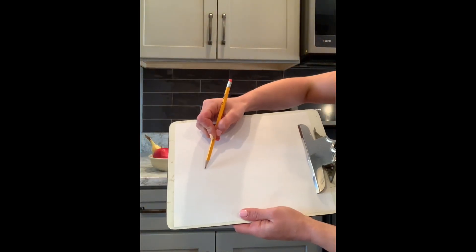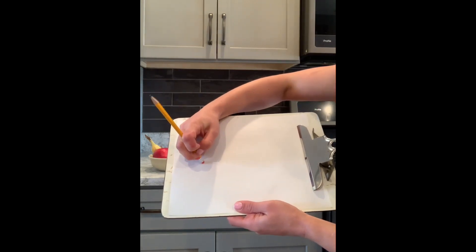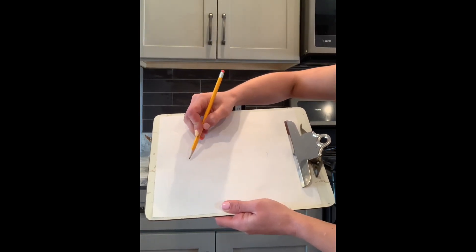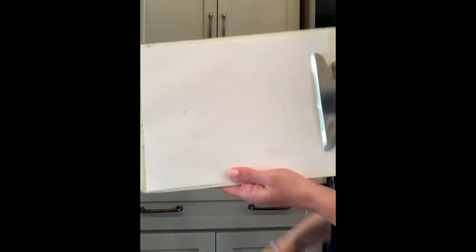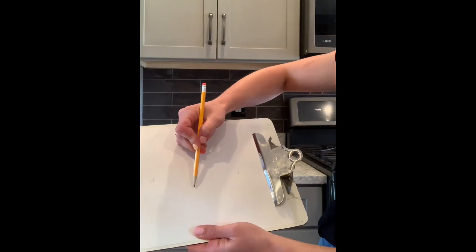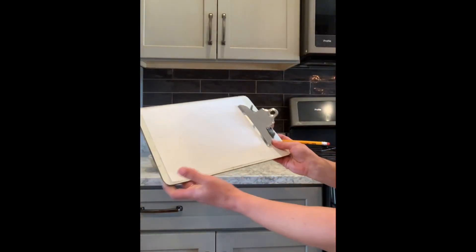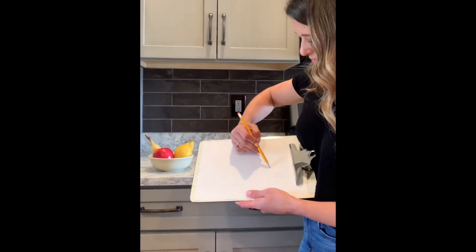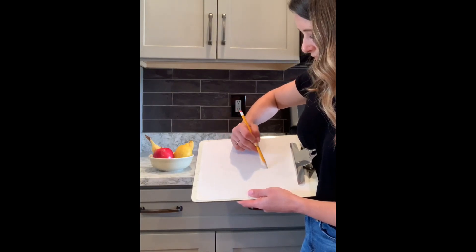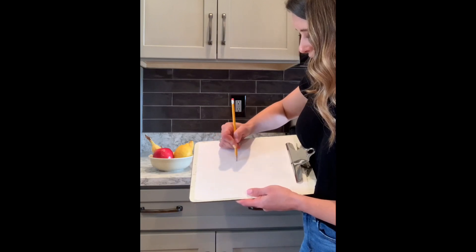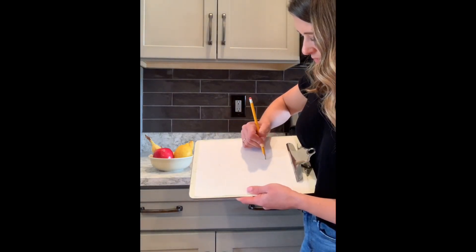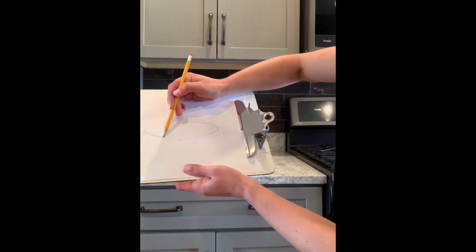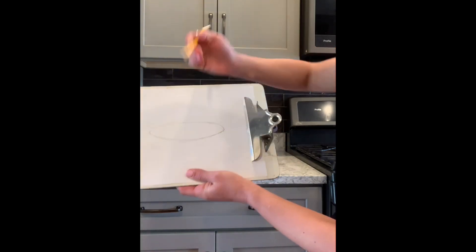Sometimes, to make myself draw big enough — because I tend to draw small — I start by marking how big I want it and giving myself parameters, then go back in and fill in those lines. I always draw light at first. I'm trying to draw dark so it shows up on the video, but if you draw light, it's easy to adjust your lines. I think this is a better representation of the opening of the bowl.